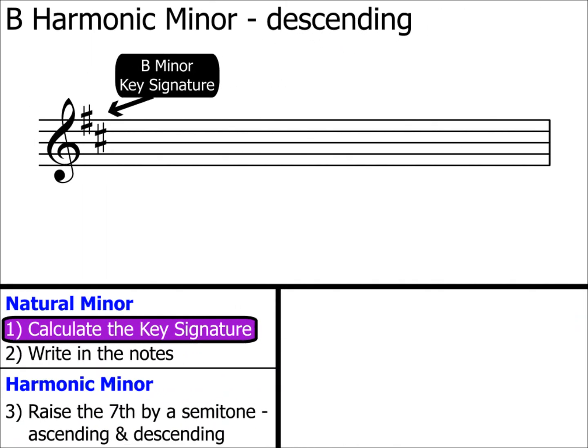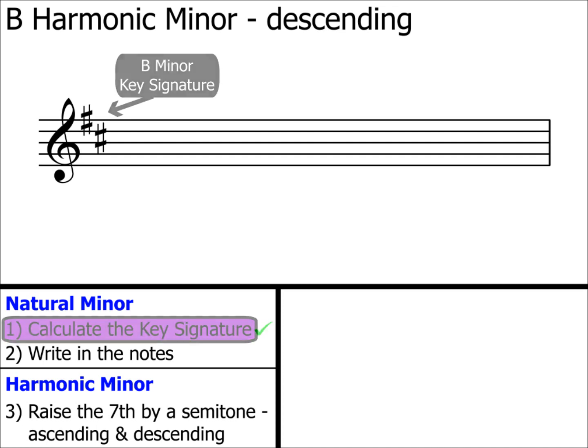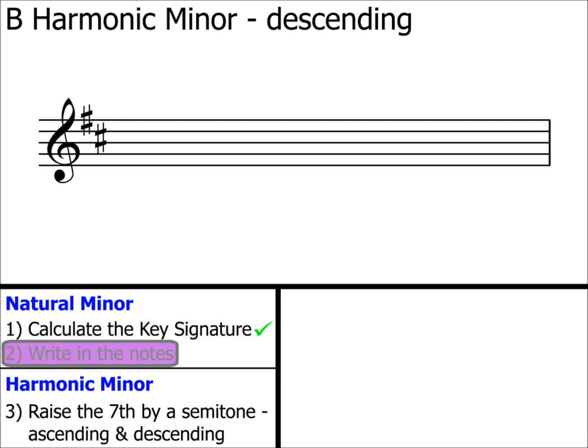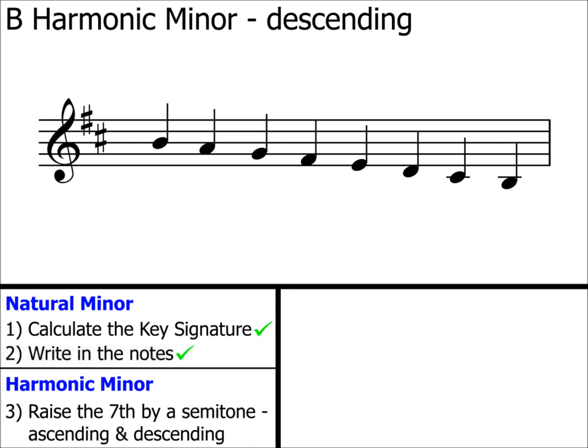So let's pop them onto our stave. Step one: complete. Step two: write in the notes. We start on B and then, ensuring that there is a note in every space and on every line, we add in the notes down to the next B. Remember that this is a descending scale, hence why we're going down. Steps one and two complete — we've now created B natural minor.